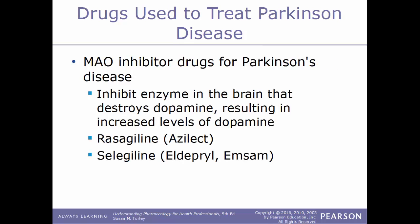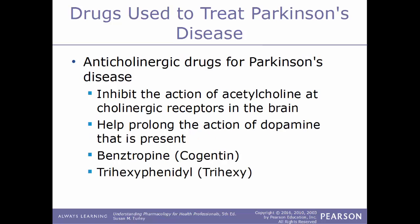Another type are MAO inhibitor drugs, which inhibit the enzyme monoamine oxidase in the brain that destroys dopamine, resulting in increased dopamine levels. Examples include rasagiline (Azilect) and selegiline, sold under the trade names EMSAM and Eldepryl.